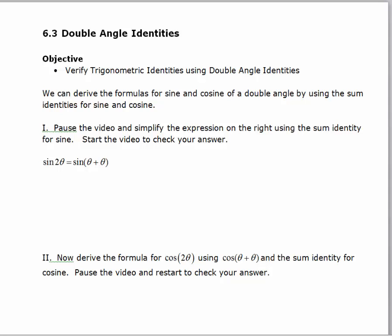In this video we're going to use the double angle identities, and these are the last identities that we're going to use in this class. There are many more identities, but what we try to do in this class is go over the common ones that may show up again in calculus. In this video we're actually going to use the sum identity for sine and for cosine to verify what are called these double angle identities.